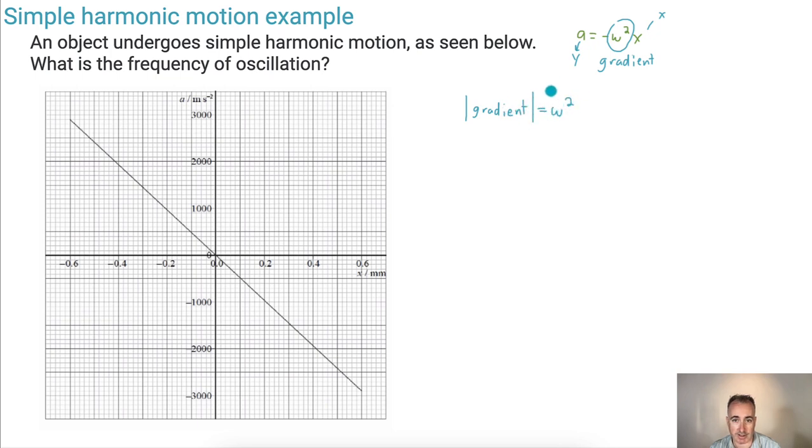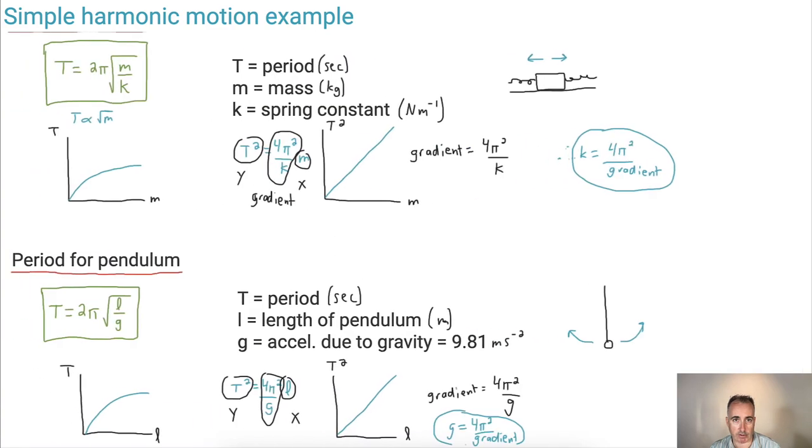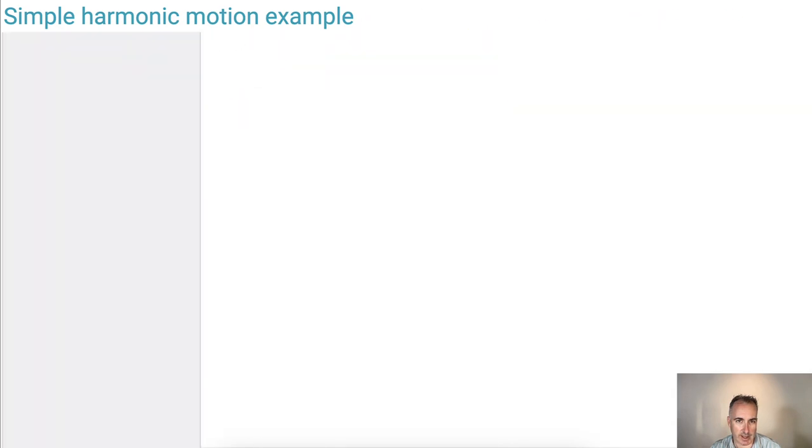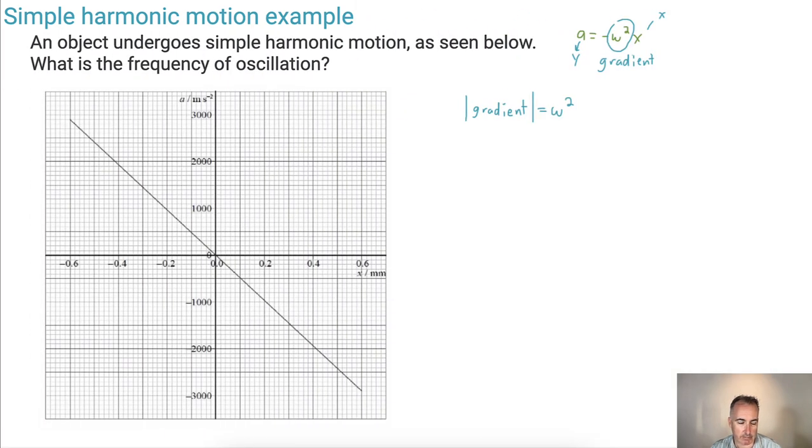Why would we bother doing that? It's pretty much the only thing we can do from this graph. But good news, once we have omega, we can calculate it by taking the square root of the gradient. Once we have omega, we can figure out f using this equation here. So let's find the gradient of this graph.